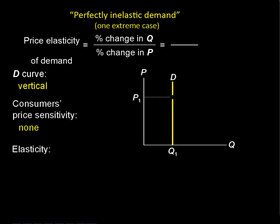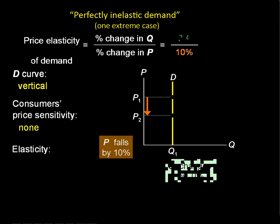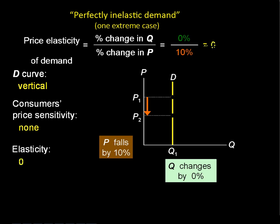Here are the different demand curve shapes. First is perfectly inelastic demand — the price goes down by 10% and the quantity doesn't change at all. This doesn't really exist in the real world. A science fiction example: if we colonized Mars and a company sold the air there, we'd pay whatever it takes — if the price goes down we don't buy more air, if it goes up we don't buy less. You'd end up with zero on the elasticity measure.